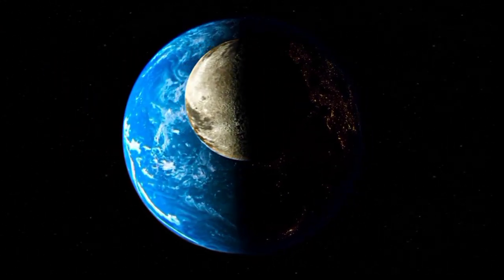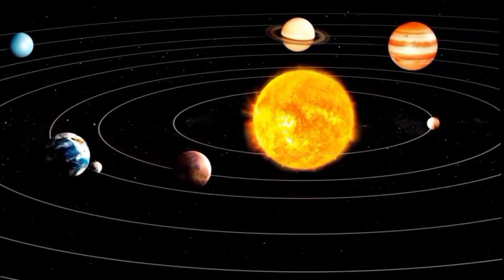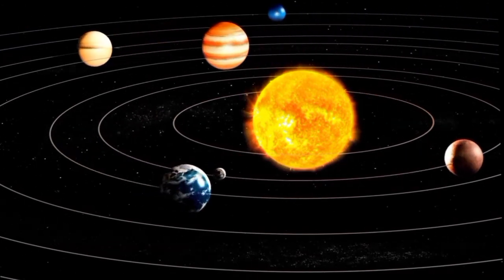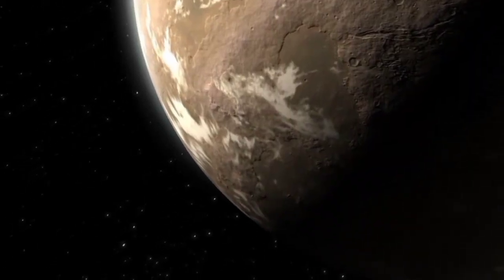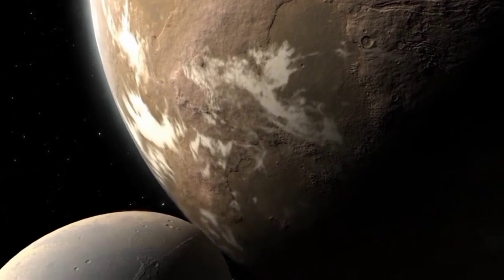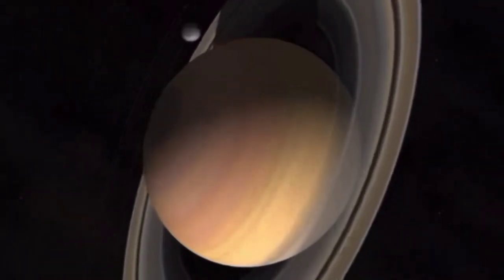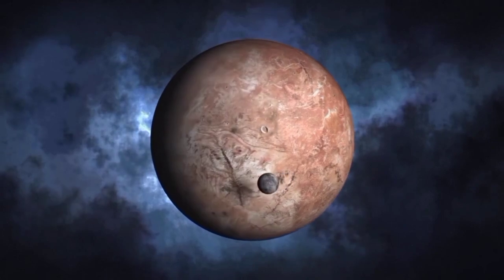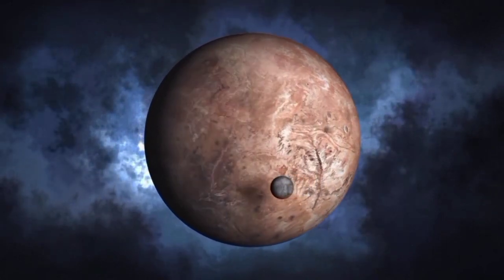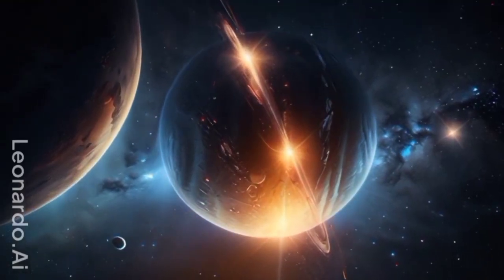The answer lies in the gravitational effects of other planets. The study of Pluto's orbit began shortly after its discovery. Initially, astronomers tried to make sense of its unusual orbit. Unlike other planets whose orbits lie relatively close to the ecliptic plane, Pluto's path stood out with its steep tilt and erratic shape. The mystery deepened when it was realized that Pluto's orbit does indeed cross Neptune's. The complexity of Pluto's orbit is a testament to the intricacies of celestial mechanics.